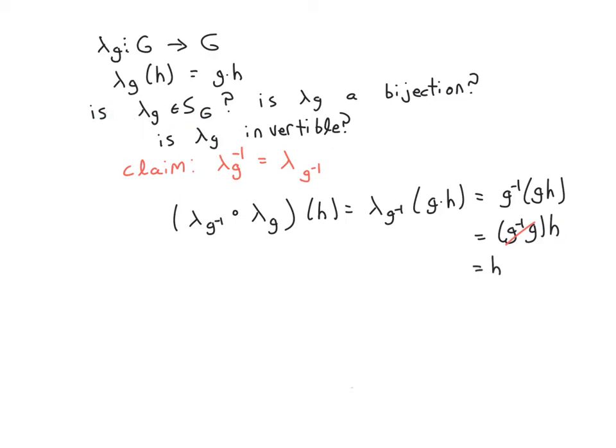And so the questions you can ask is, is this actually a permutation? Is it a bijection? One of the equivalent ways of showing something is a bijection is showing it's invertible.